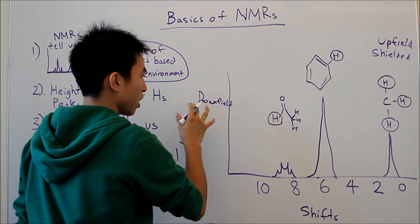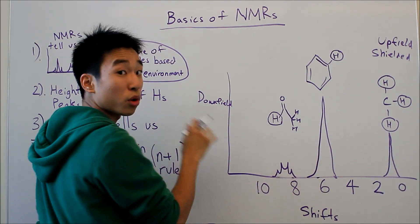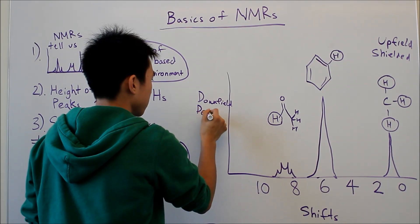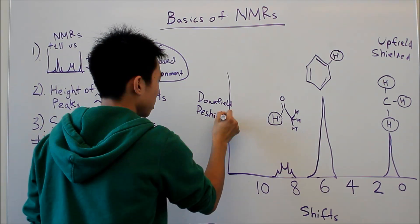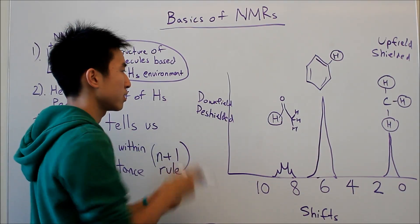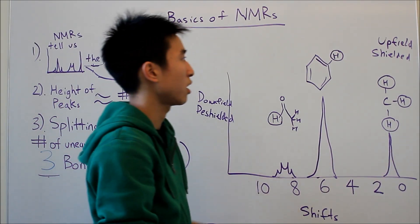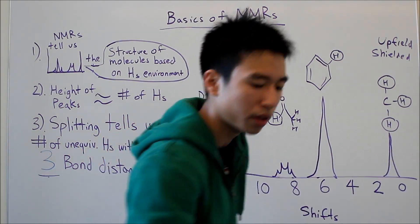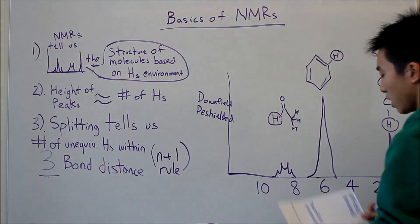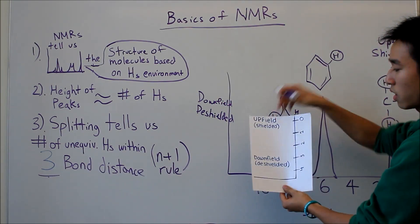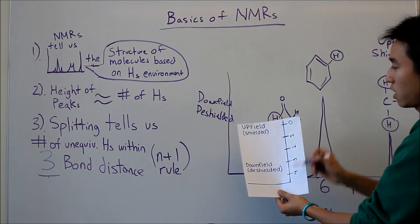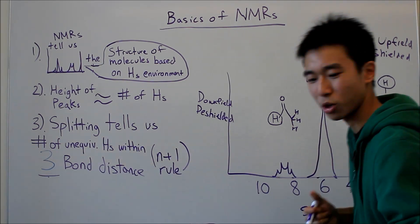And then the more downfield you go, the more deshielded the hydrogens are. So you can kind of remember it as double D, and then upfield shielded. And another trick I use to remember this is, if you take your NMR and you literally just turn it, then downfield will be more down, and upfield will be more up. Hope that helps.